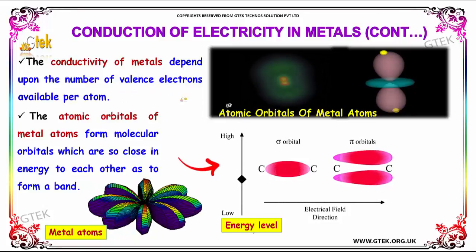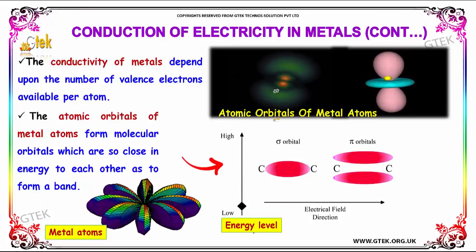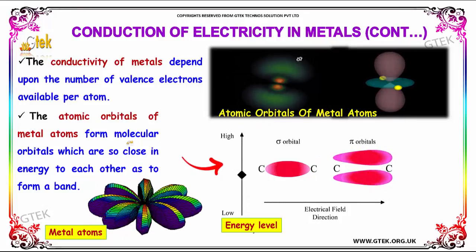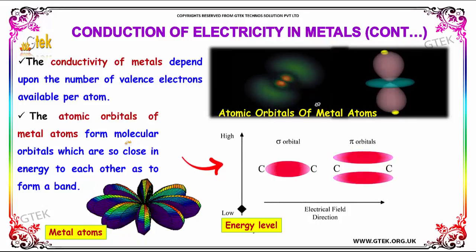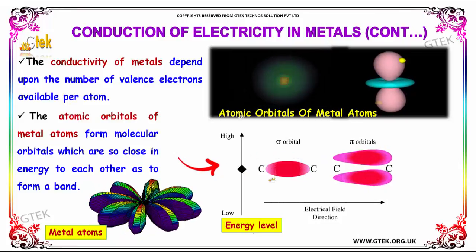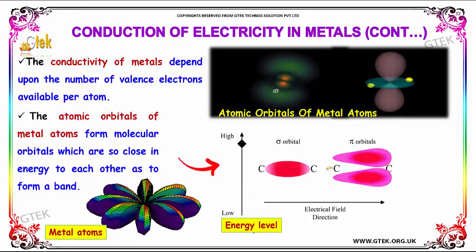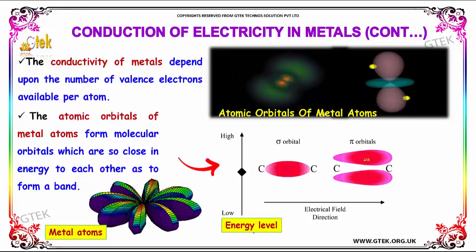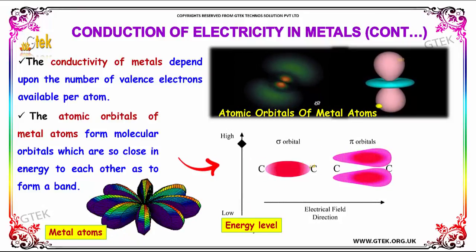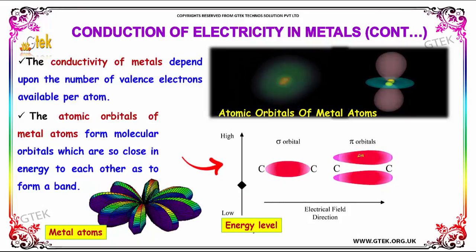The conductivity of materials depends upon the number of valence electrons available per atom. The atomic orbitals of metal atoms form molecular orbitals, which are so close to each other in energy as to form a band. This is a typical example of a sigma bond and this is your pi bond.